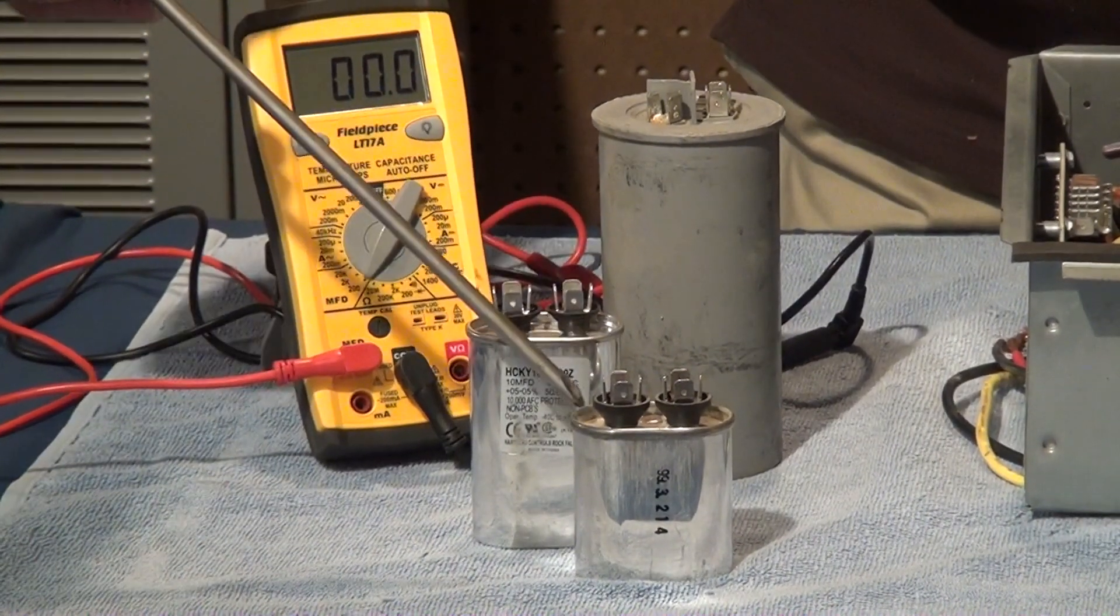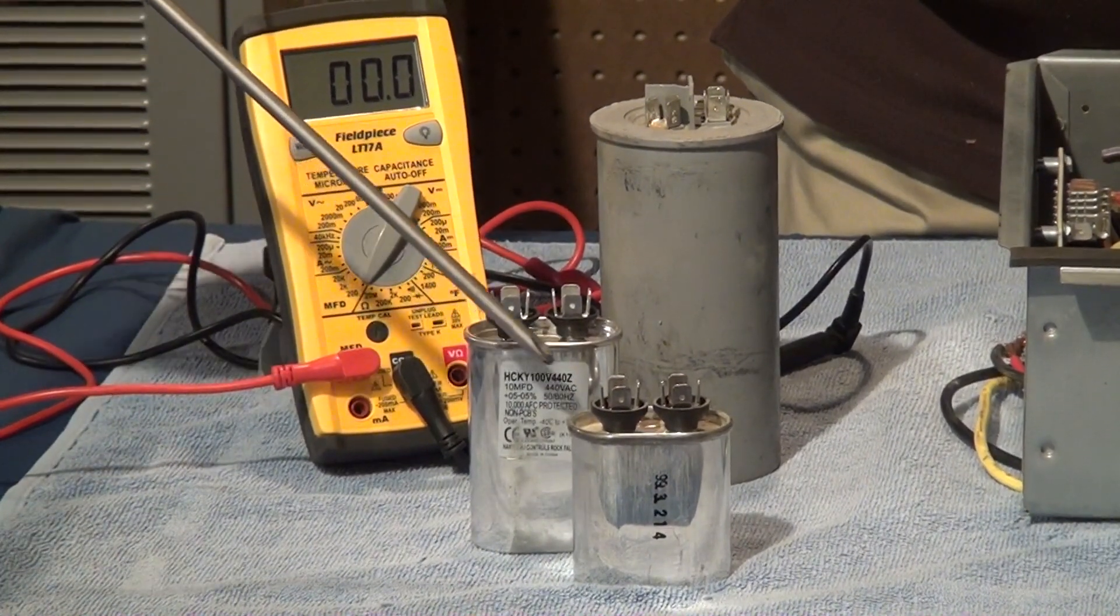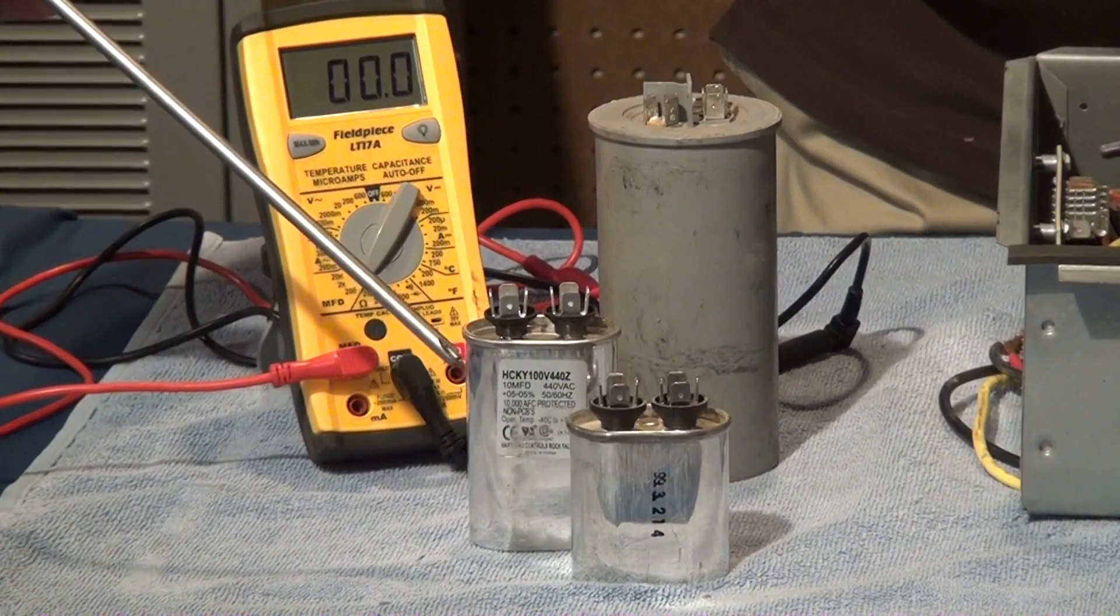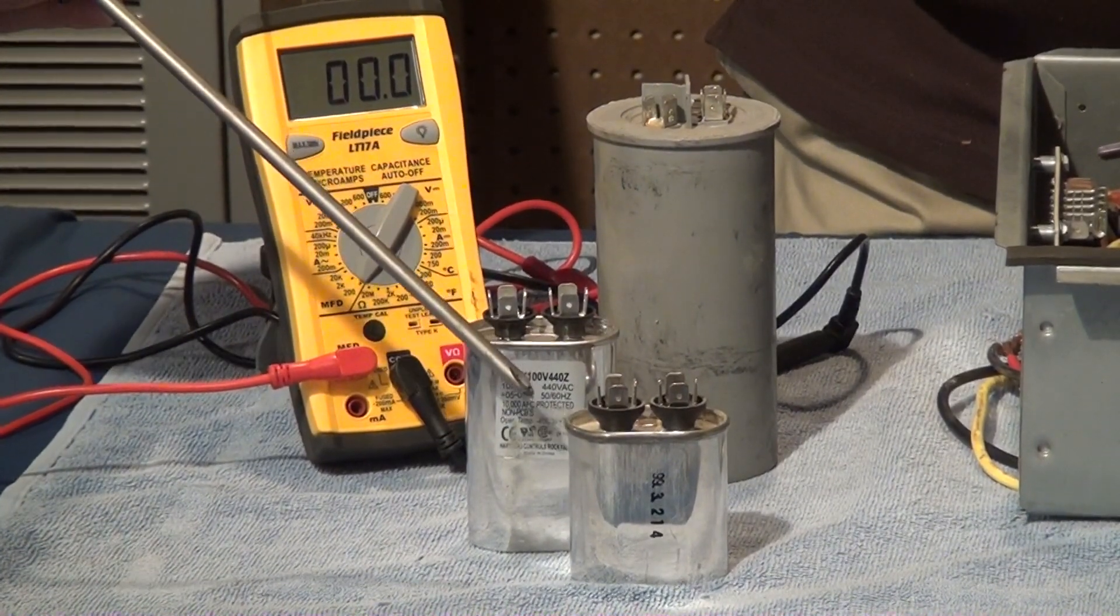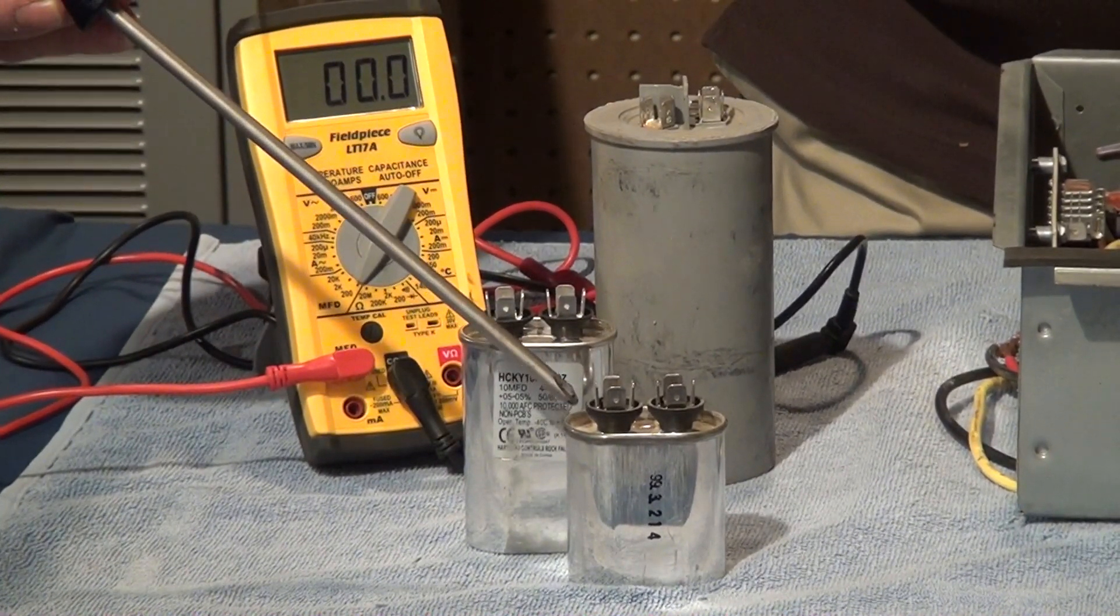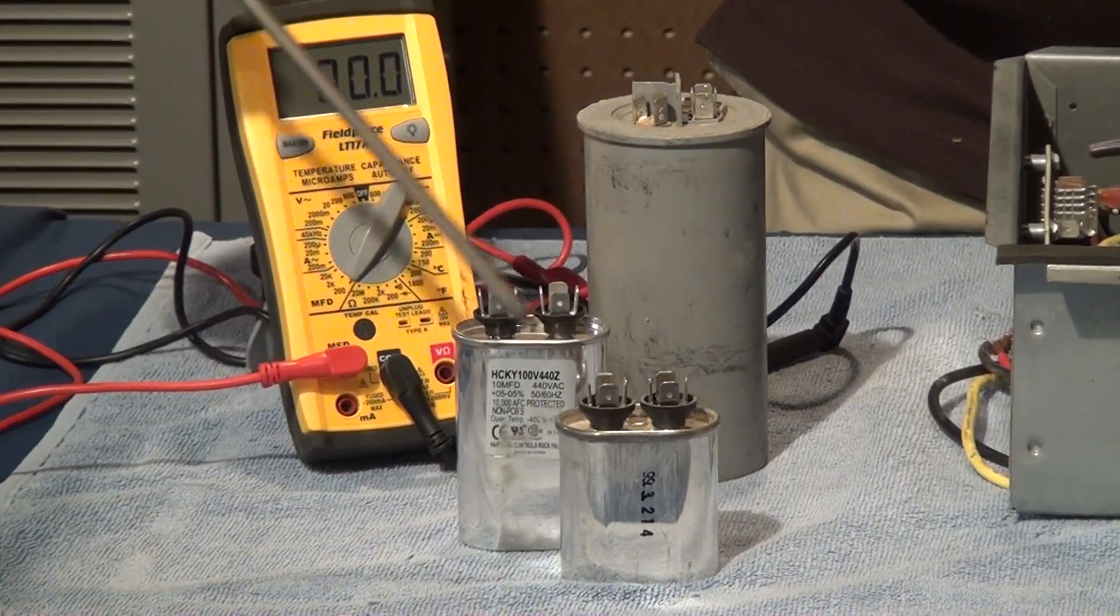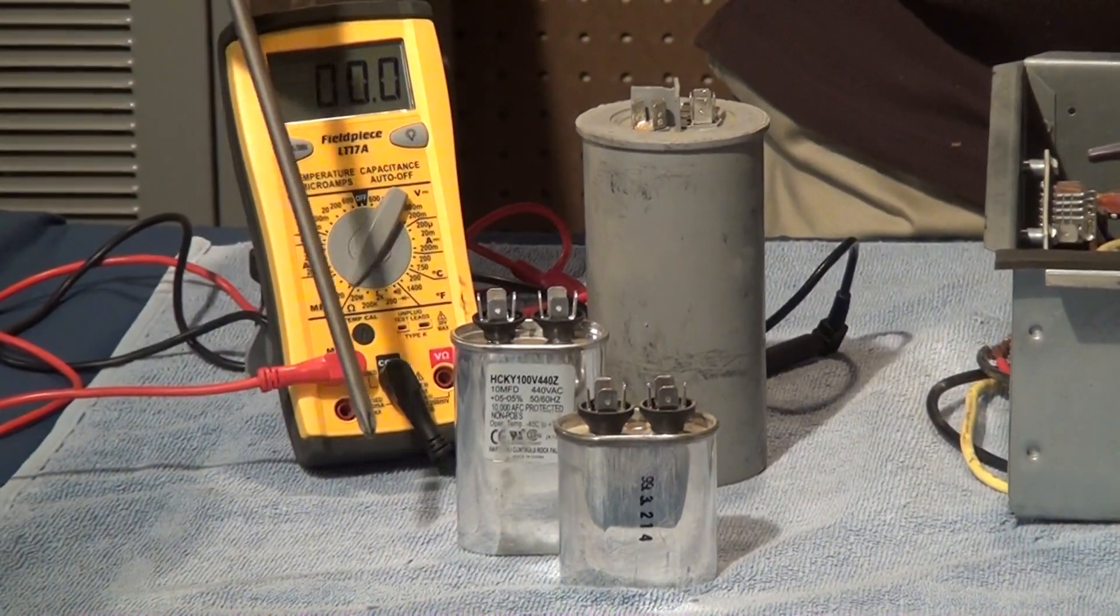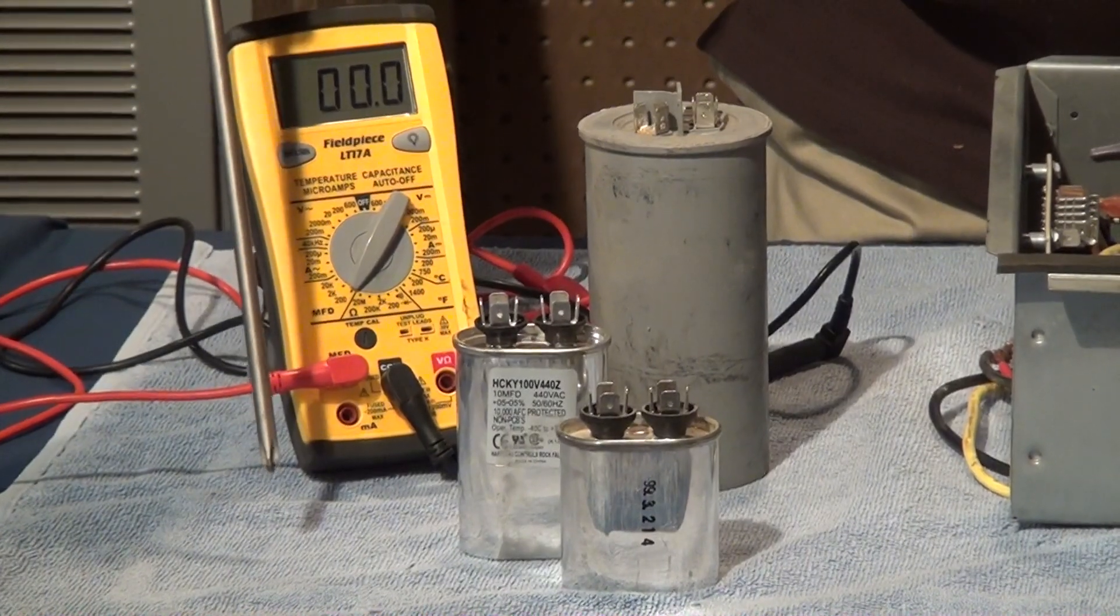We want to point out that the fact is that these two capacitors when they're wired in the circuit according to the diagram that we're showing you, they are wired in parallel. So what we would do is we would add up the total capacitance so that we would know what was exactly in that circuit going through the start winding in the run mode. Now this is one way that they would show them.